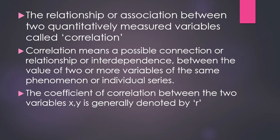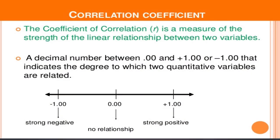The coefficient of correlation is a measure of the strength of the linear relationship between two variables — a decimal number between minus one and plus one that indicates the degree to which two quantitative variables are related. In this picture you can see a central point zero, which indicates no relationship, and on either side minus one and plus one showing strong negative or strong positive correlation.